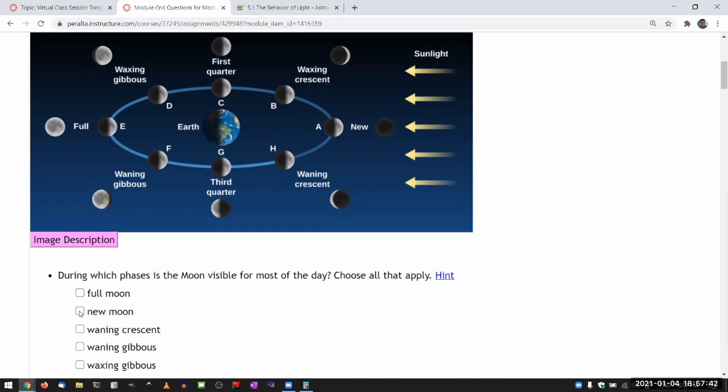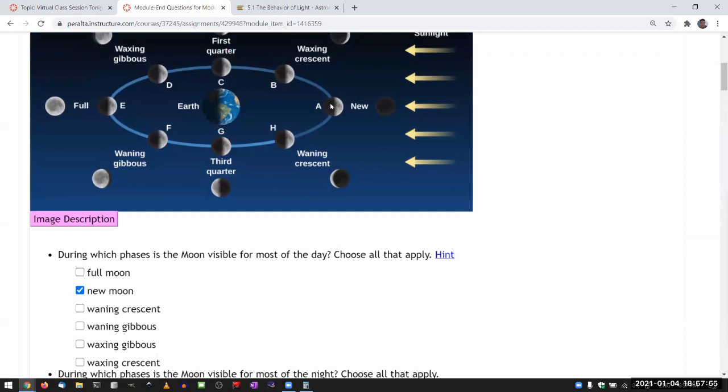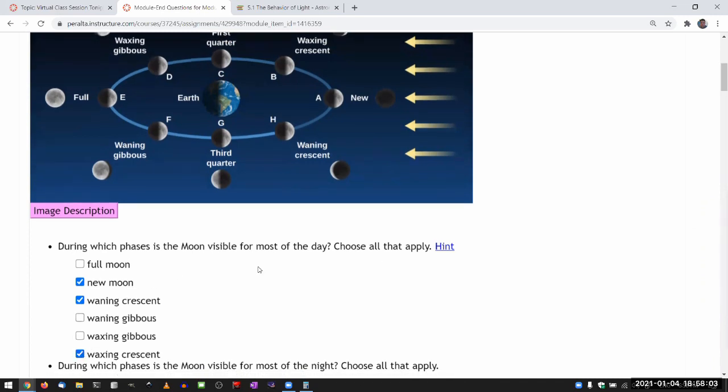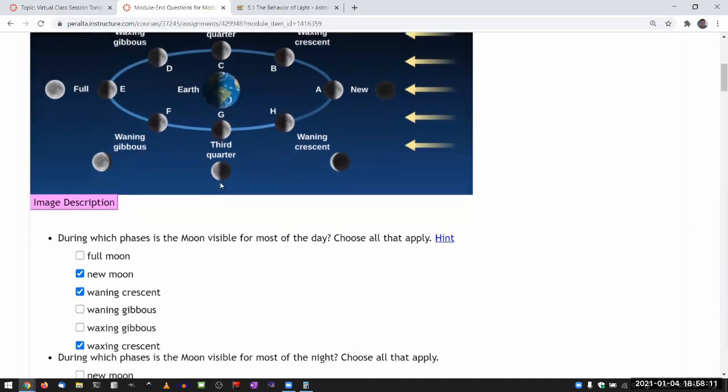So it's not going to be full moon. And the new moon, it's technically not visible. Let me check it, and then if the system says it's not 100% correct, I'll uncheck it. Because the new moon would be in the sky, but you can't really see it. Waning crescent and the waxing crescent will definitely be visible for most of the day. And the first quarter and the third quarter will be visible for half of the day.